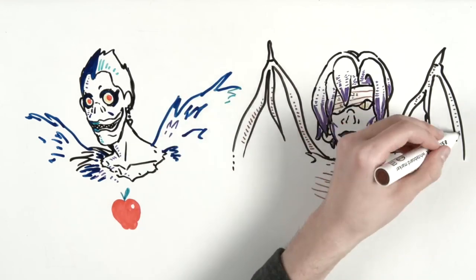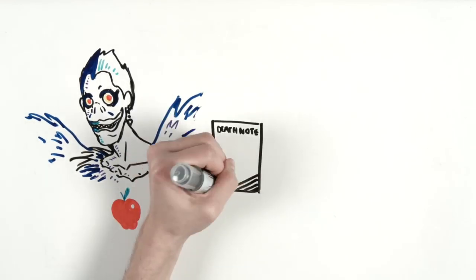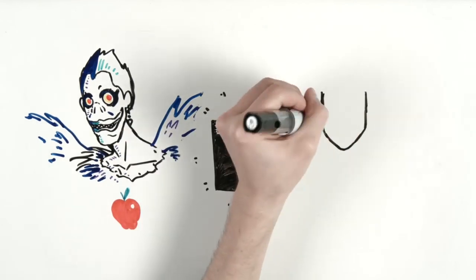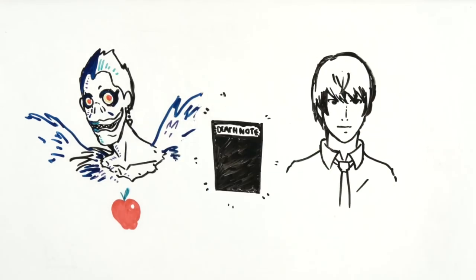Ryuk is a bored Shinigami who drops his Death Note into the human world, and an intelligent yet disaffected high school student called Light Yagami finds it. He writes a criminal's name on the notebook to verify that the object works.